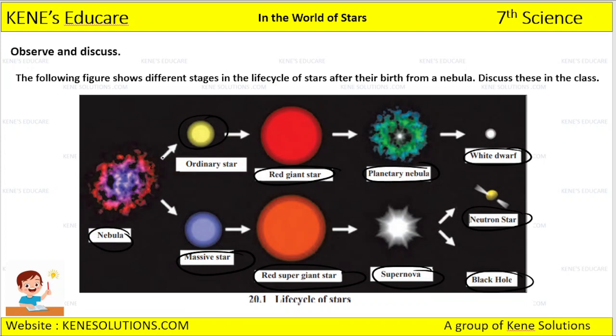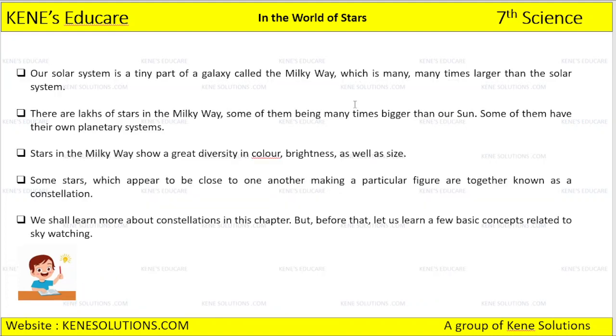The nebula are the clouds from which stars are formed. We can identify what is the ordinary star, red giant star, and planetary nebula. In this way, the stars have formed.